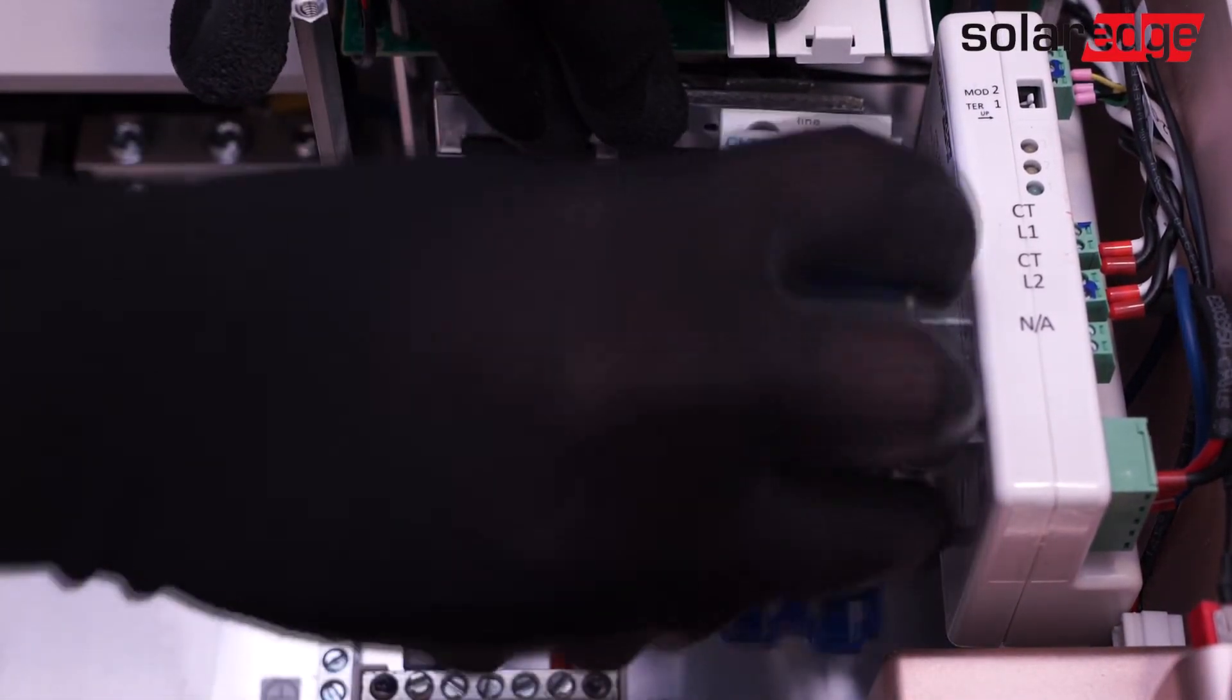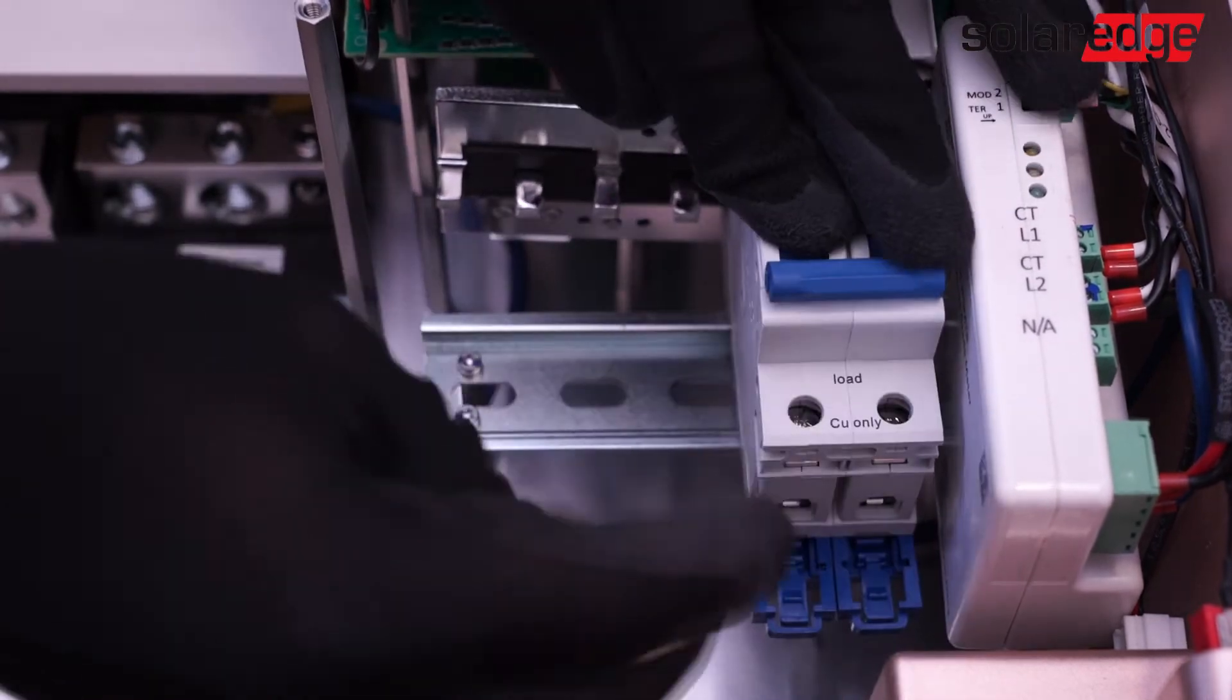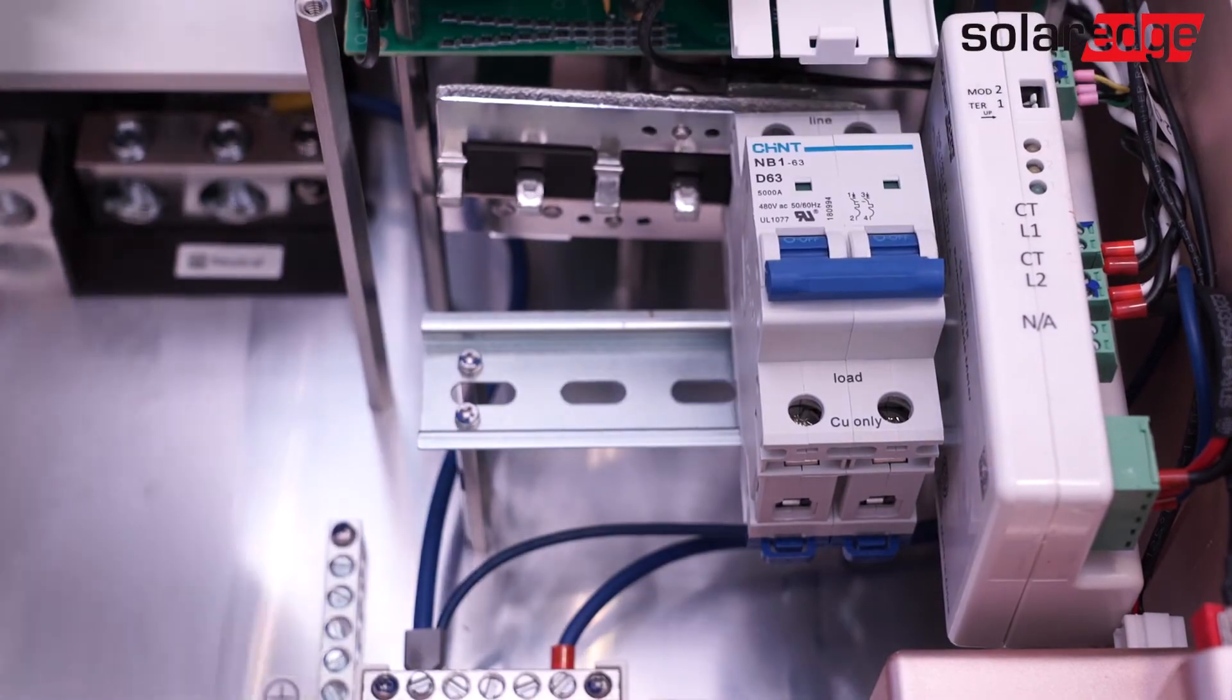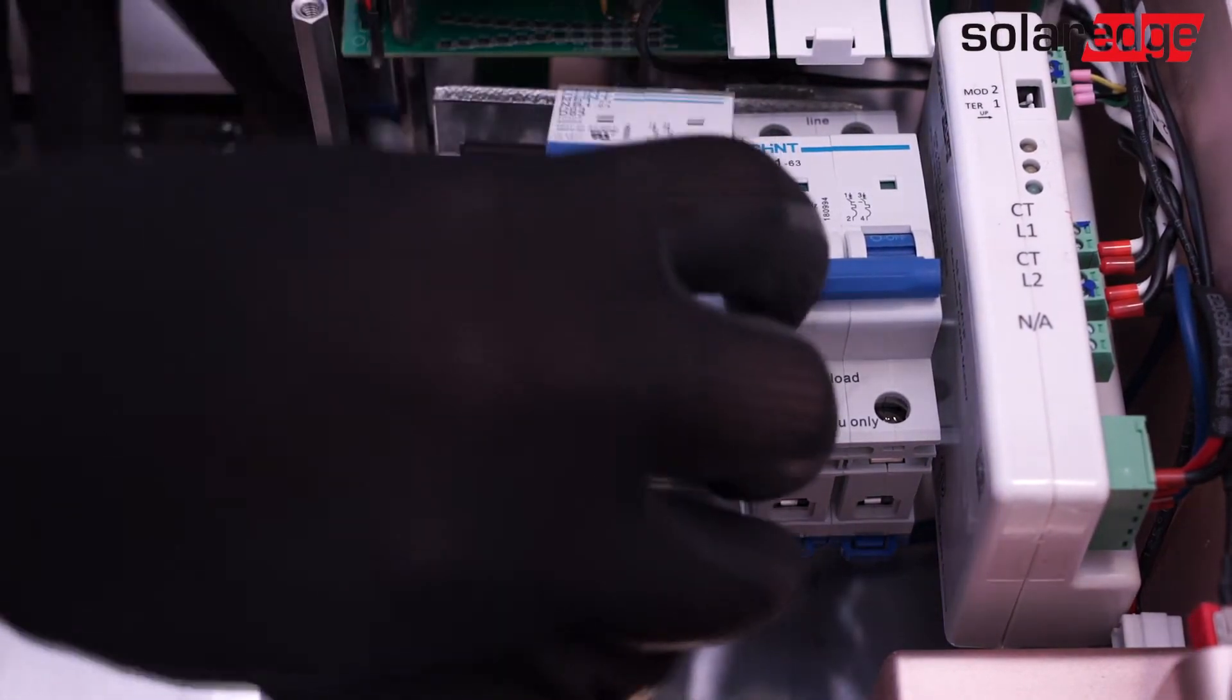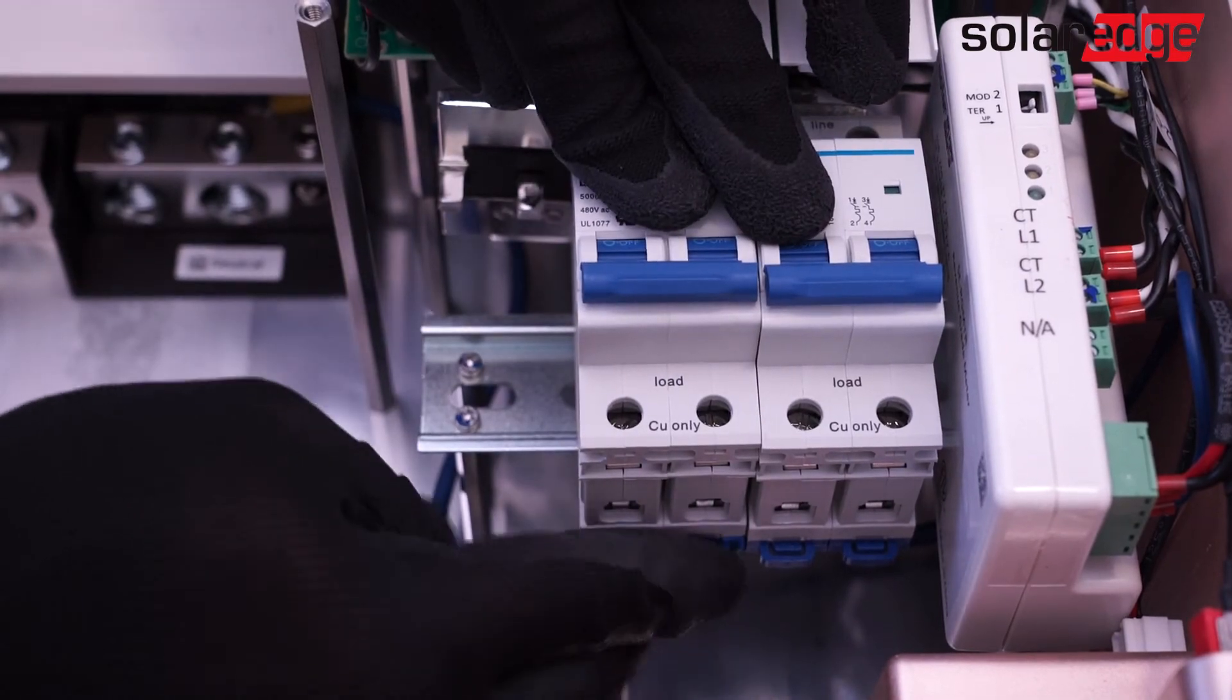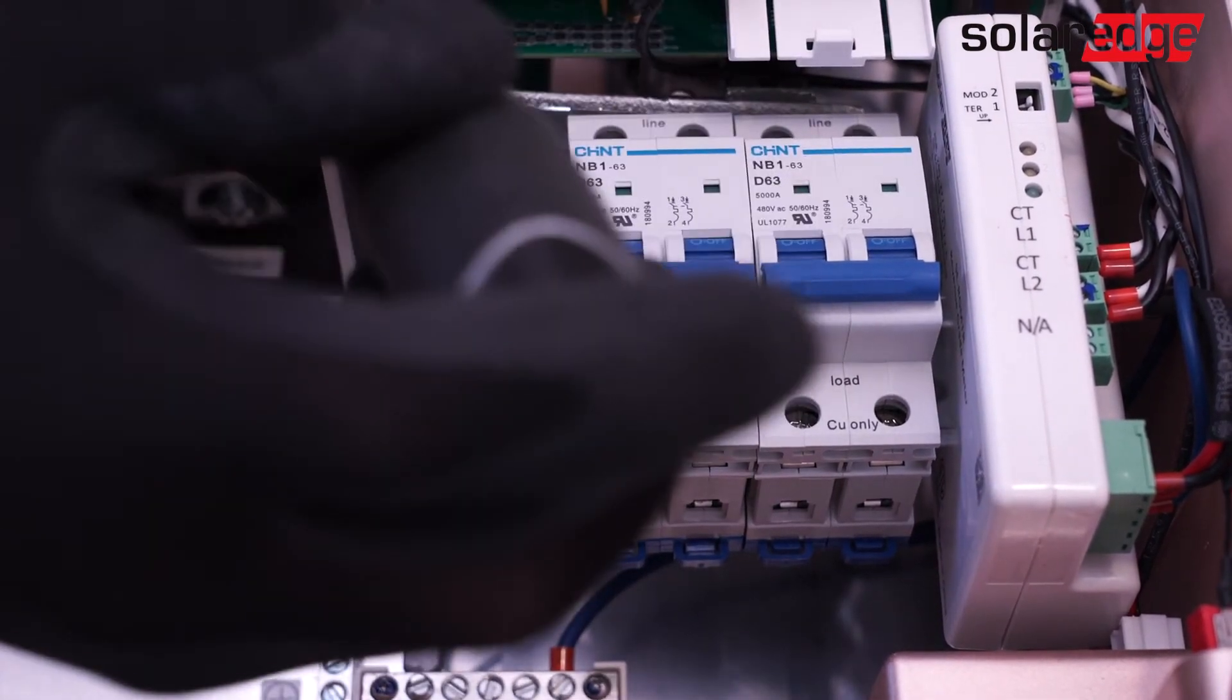You can now place the 63-amp breakers on the DIN rail. Secure the tabs on each of the breakers first. Once all the breakers are in place, tighten the screws that secure the breakers to the DIN rail.